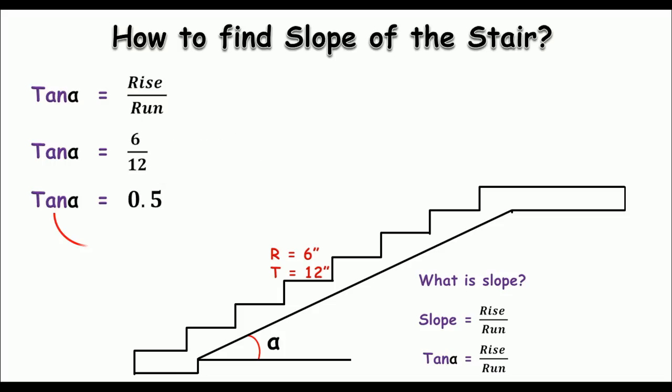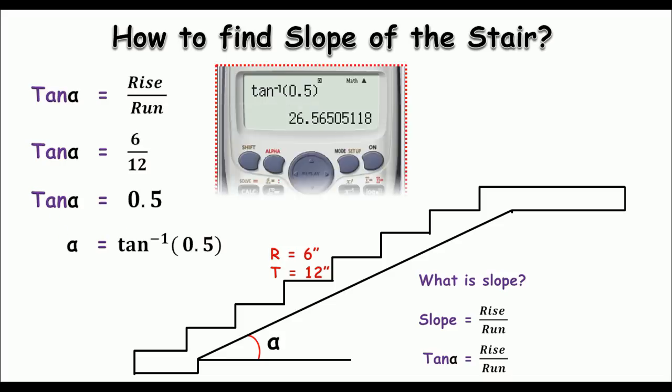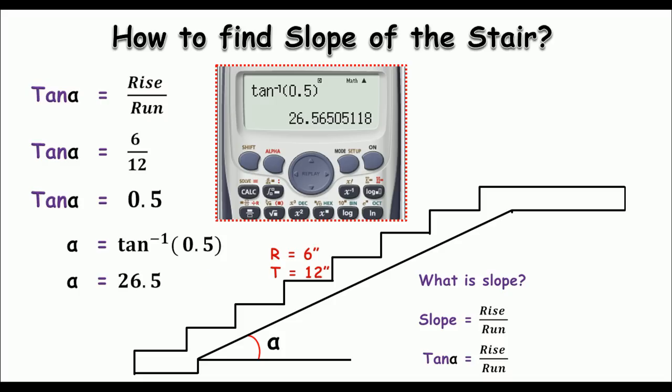Now as our requirement is just alpha, we can turn the tangent to another side of the equation. We can get of course alpha equals tangent inverse of the same thing. Now use your calculator, we can get tangent inverse of 0.5 equals 26.565 degrees.